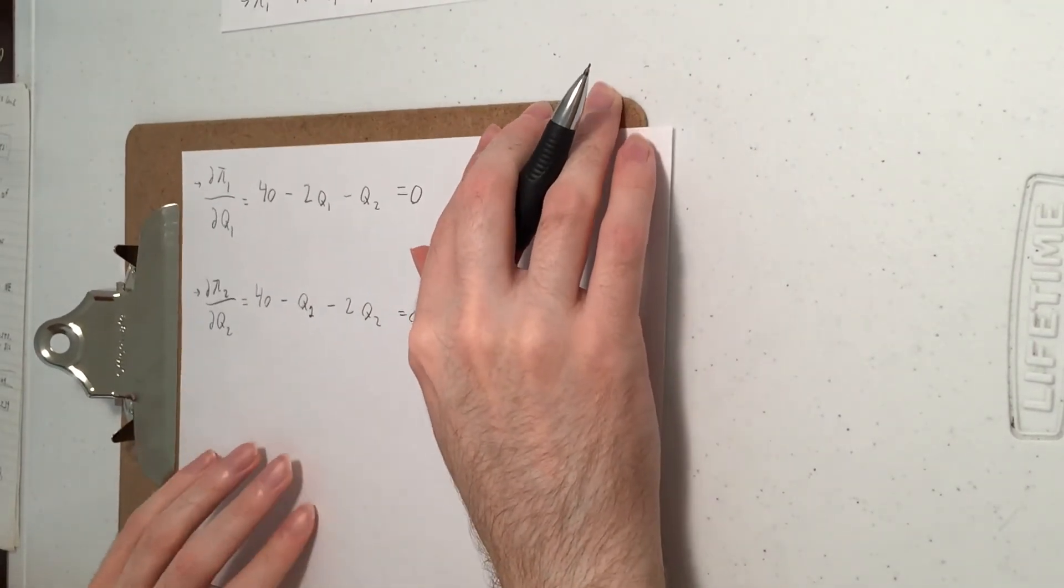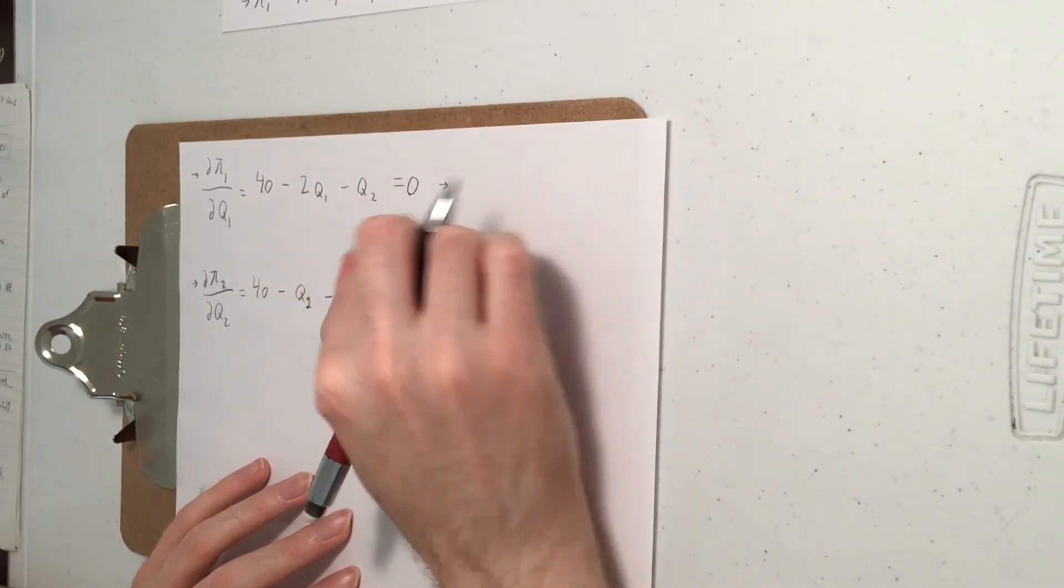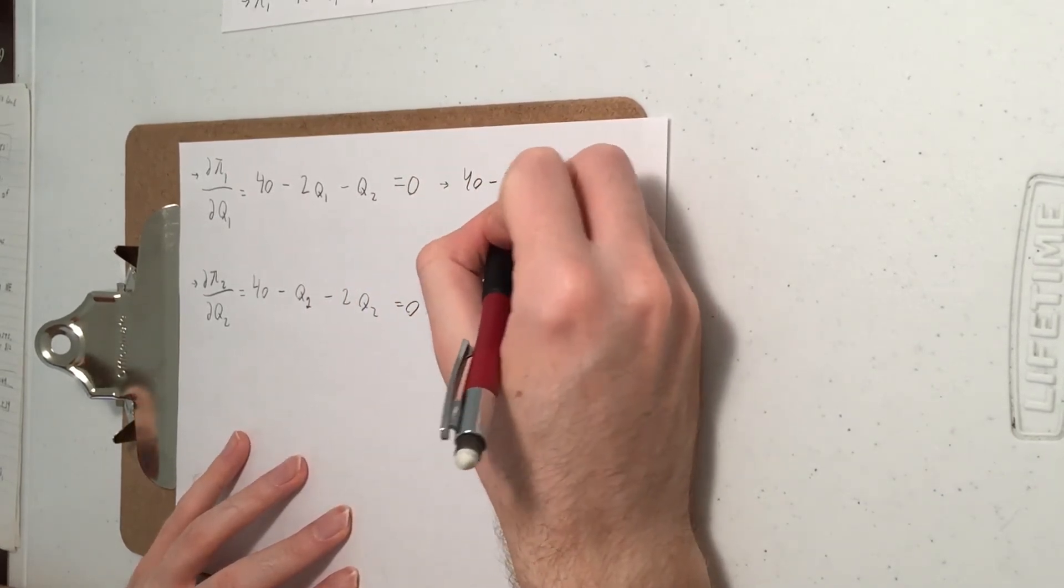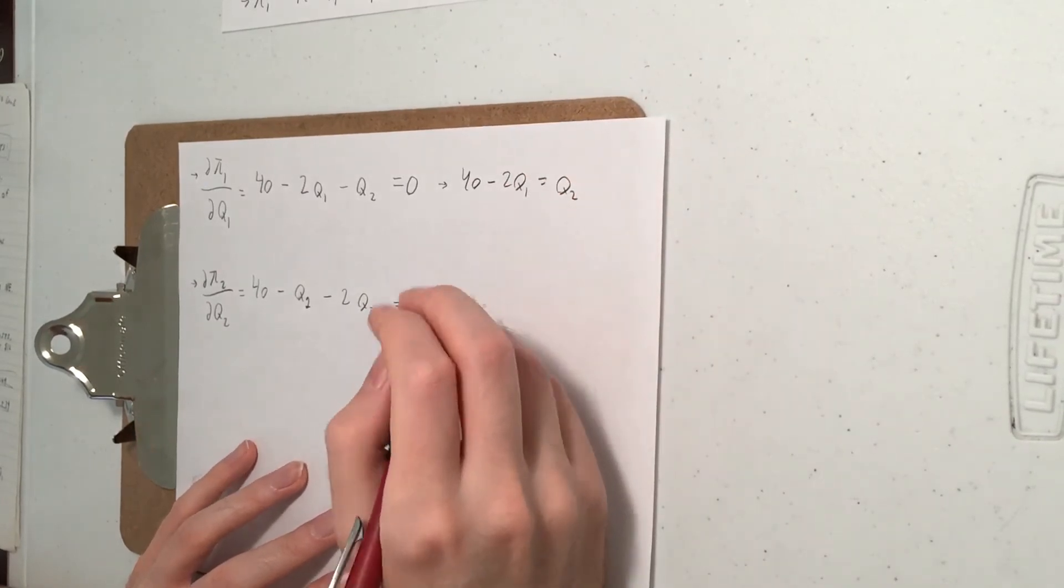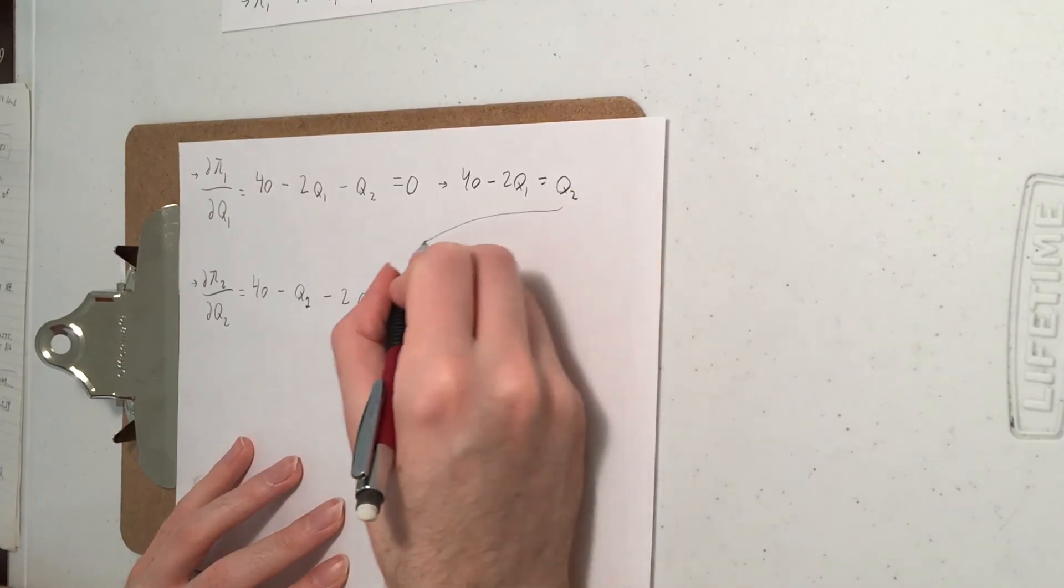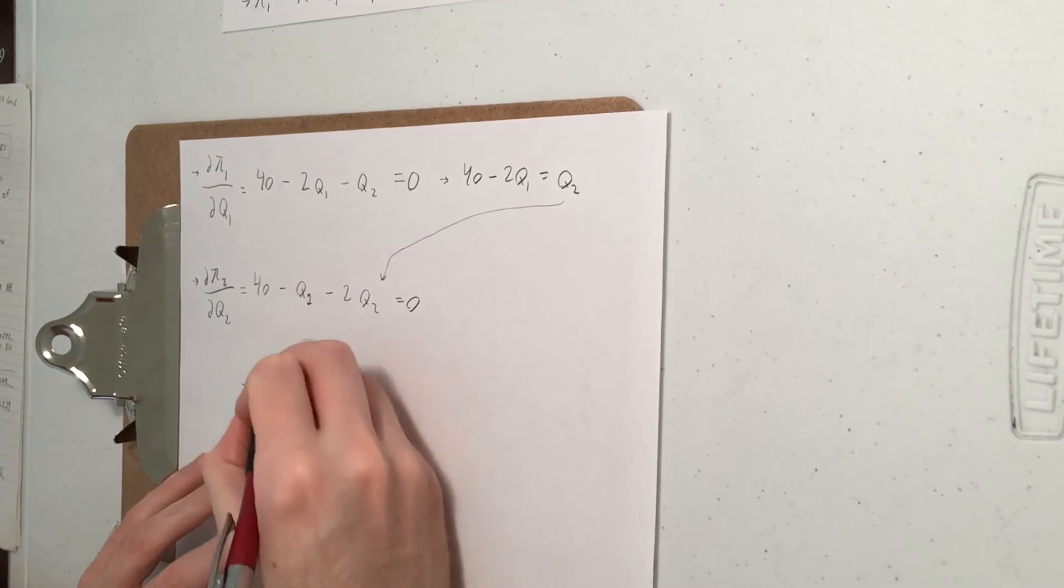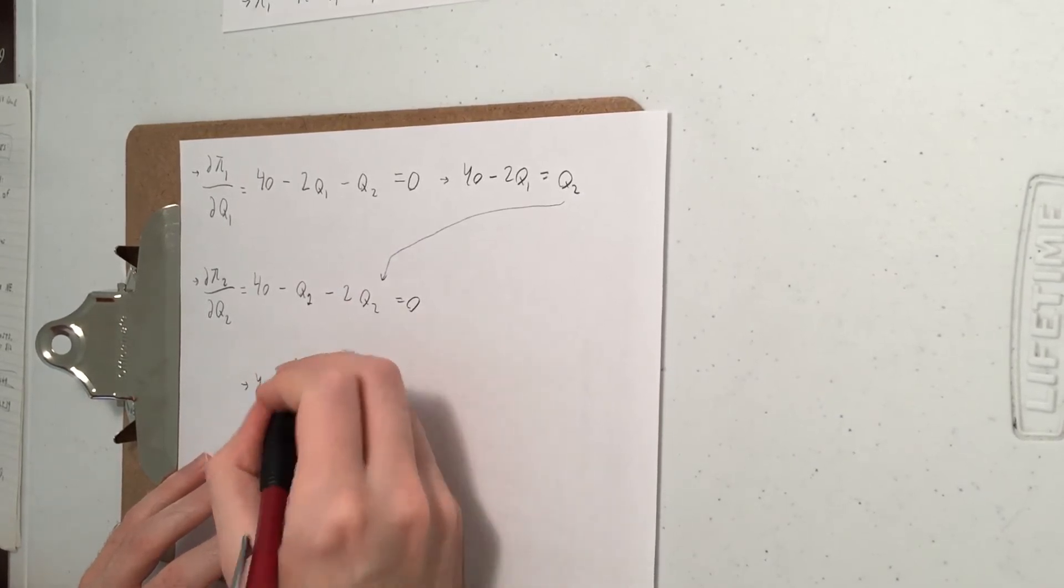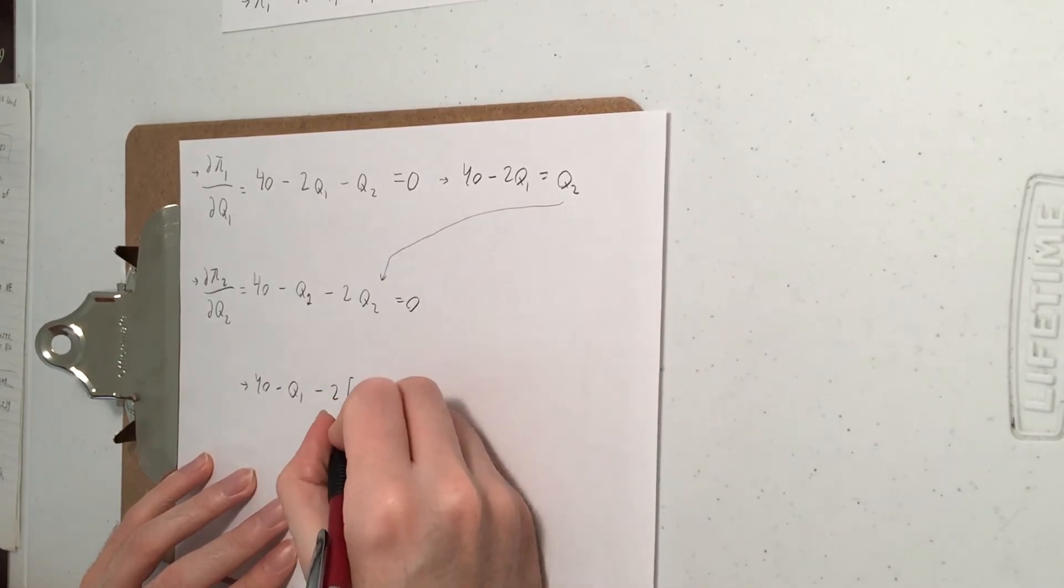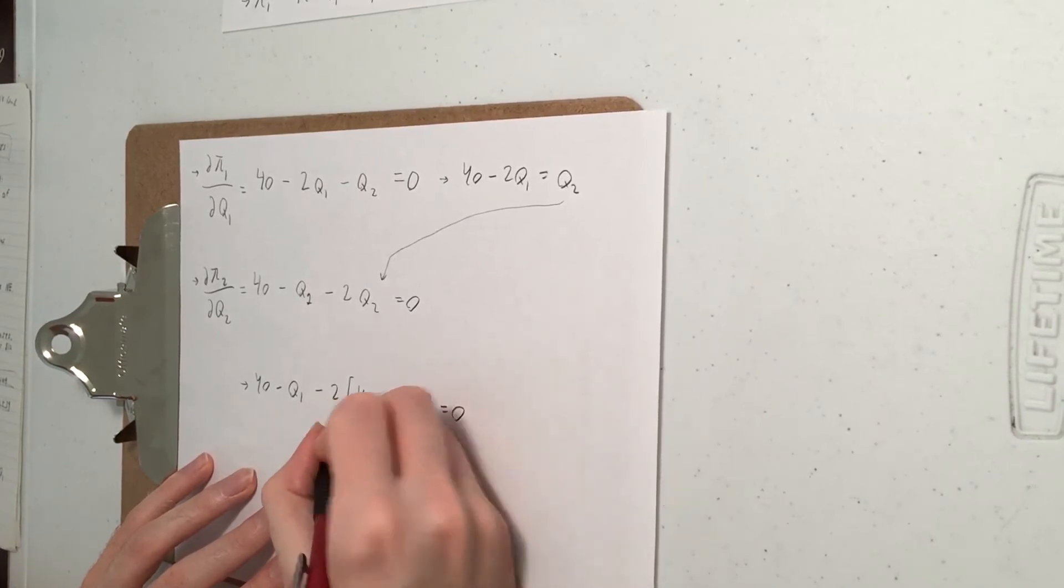All right, two equations, two unknowns. Hopefully this will work out. So I'll just put the Q2 on the other side. 40 minus 2Q1 equals Q2. And then I can plug that in down over there. So I have 40 minus Q1 minus 2 times Q2, but Q2 is that. That equals 0.